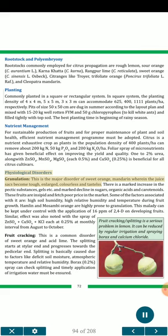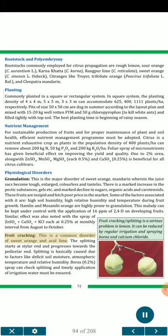Physiological Disorders. Granulation: This is the major disorder of sweet orange and mandarin, wherein the juice sacks become tough, enlarged, colorless and tasteless. There is a marked increase in pectic substances and a marked decline in sugars, organic acids and carotenoids. These fruits fetch poor prices in the market. Factors associated with it include high soil humidity and high relative humidity and temperature during fruit growth. Hamlin and Mosambi orange are highly prone to granulation. This malady can be kept under control with application of 16 ppm of 2,4-D on developing fruits or spray of ZnSO₄ + CuSO₄ + KCl each at 0.25% at monthly intervals from August to October. Fruit Cracking: This is a common disorder of sweet orange and acid lime; splitting starts at stylar end and progresses towards the pedicellar end, caused by deficit soil moisture, atmospheric temperature and relative humidity. Borax 0.2% spray can check splitting; timely irrigation must be ensured. Fruit cracking/splitting is also a serious problem in lemon and can be reduced by regular irrigation and spraying borax and calcium chloride.